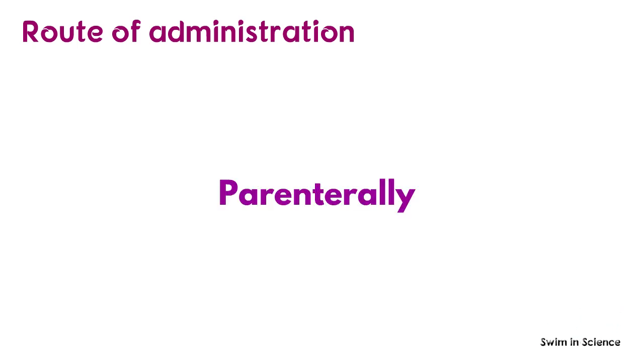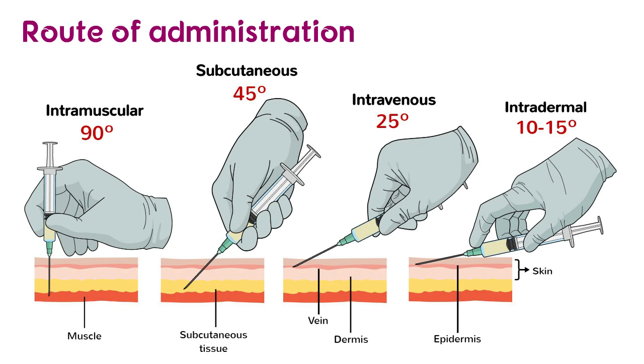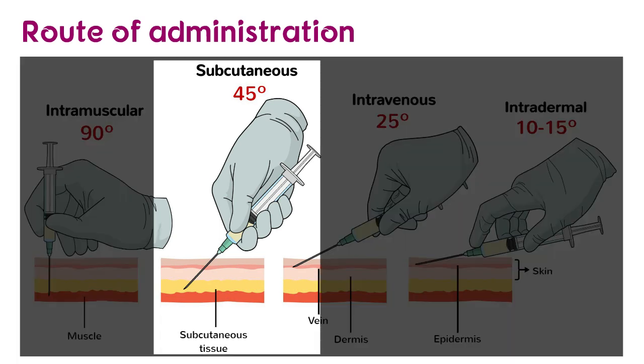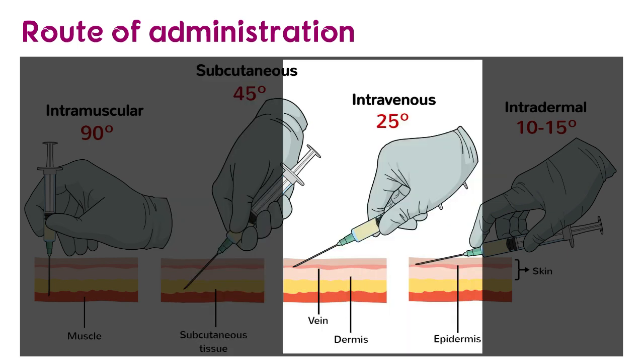The route of administration also strongly influences which immune organs and cell populations will be involved in the response. Immunogens are generally administered parenterally, that is, by routes other than the digestive tract. The subcutaneous route is frequently used for the administration of immunogens, as it moves first to the local lymph nodes and activates T-cells and B-cells. However, intravenous administration is preferred for soluble antigens without any adjuvant.